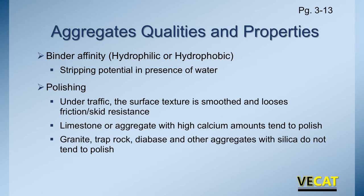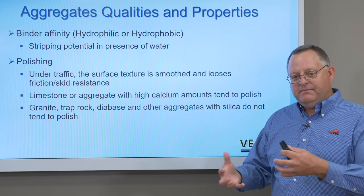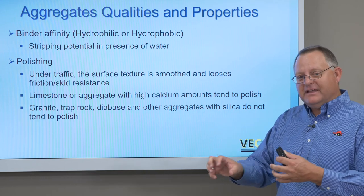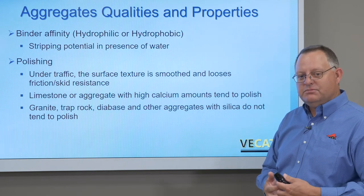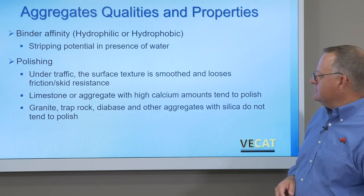We also need to know if the rock in the asphalt will polish — when subject to traffic, does it become smoother, lose skid resistance, and cause safety issues? Limestone or aggregates with high calcium amounts tend to polish, and by spec, everything classified as limestone is treated as a polishing aggregate. Whereas granites, trap rocks, diabases, and aggregates with silica don't tend to polish — under traffic they keep their micro texture and rough edges and don't tend to get smoother, so we don't have skid issues for safety.